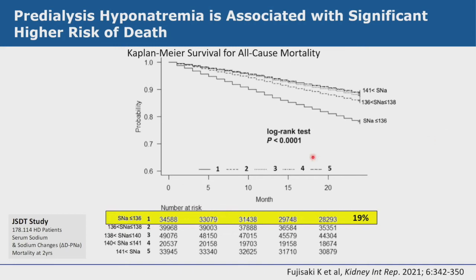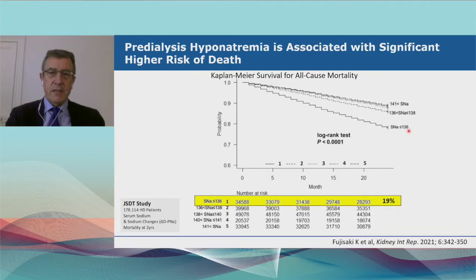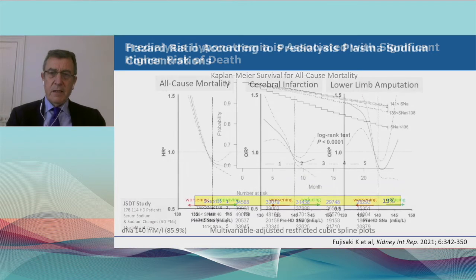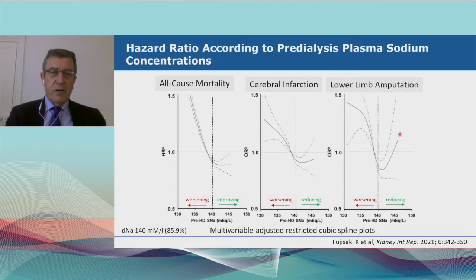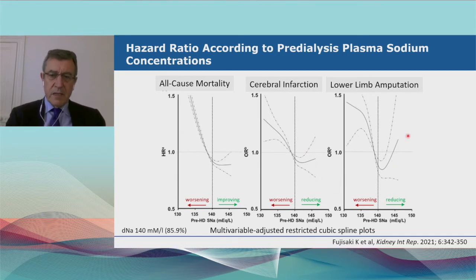A recent Japanese study — in a population at very low dialysis mortality risk — identified that almost 20% present with hyponatremia below 136, associated with up to 20% higher mortality after two years. Causes of mortality were notably cerebral infarction and lower limb amputation — reflecting peripheral arteriopathy — confirming that hyponatremia is part of cardiovascular risk.